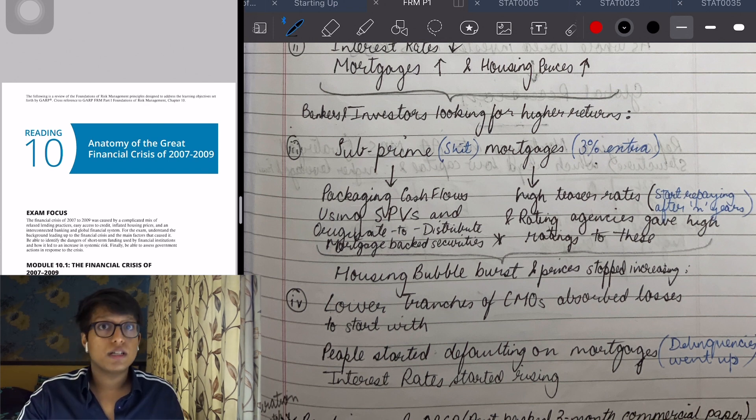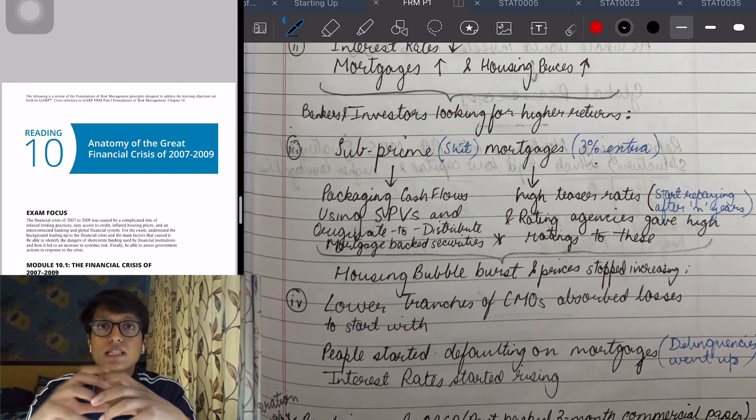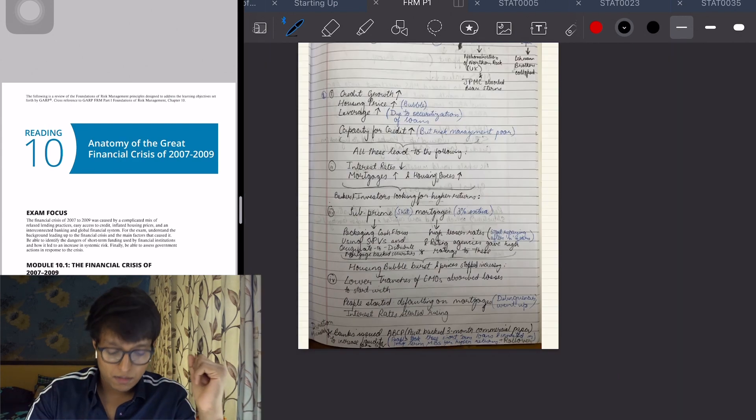Obviously there was a duration mismatch, as I've told you many times, because banks were funding these CDOs and purchasing them using overnight repos.